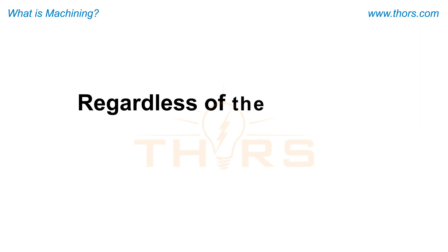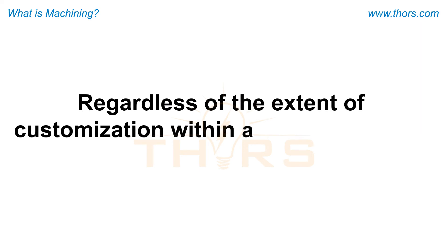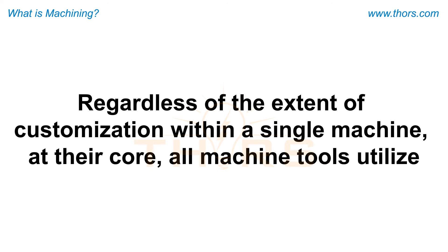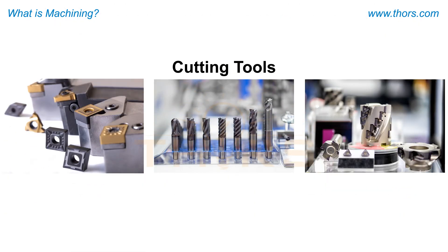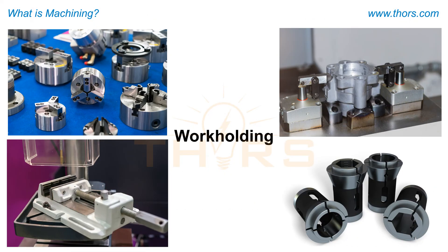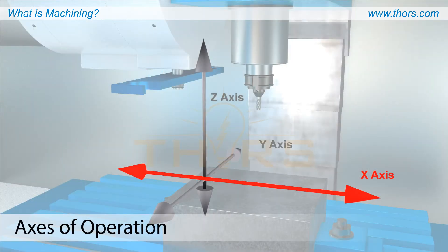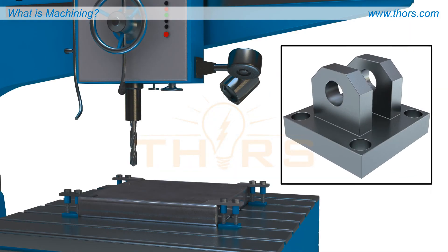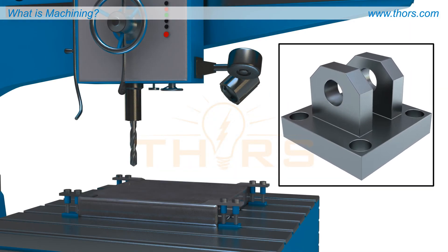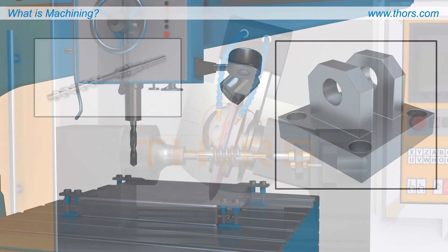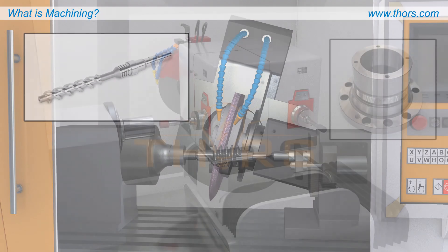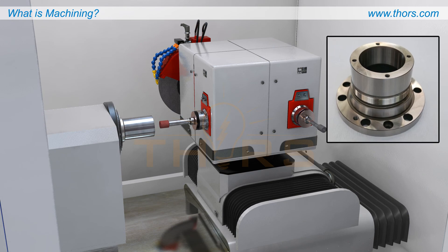Regardless of the extent of customization within a single machine, at their core all machine tools utilize cutting tools, work holding, and specific operational movement which results in metal removal. The identification of machine tool categories and common components is essential for a better understanding of the capabilities of and applications for such impressive machinery.